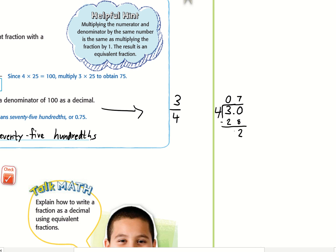I do not want a remainder, so I'm going to add another zero. Drop down the zero. 4 goes into 20 five times. 5 times 4 is 20. Now I have a remainder of zero, so my final answer is 0.75 or 75 hundredths.